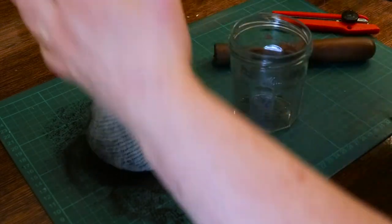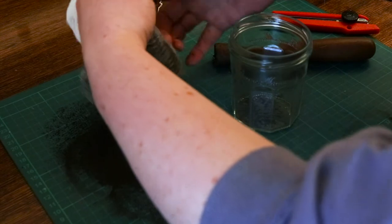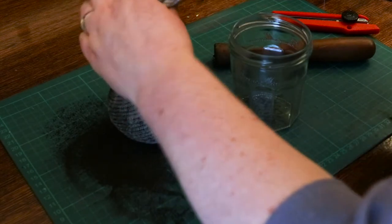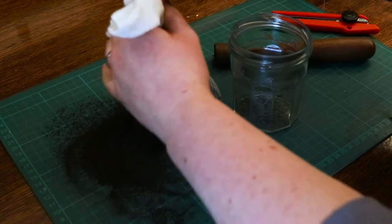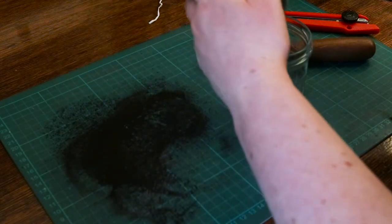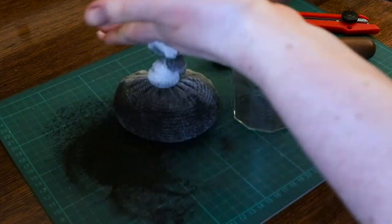Basically, I'm crushing up aquarium charcoal, putting it in a bag, soaking it in some water and then packing it into a bottle that I've altered. I can pour my brush cleaning water through this and the charcoal acts as a filter to catch all the little paint particles.